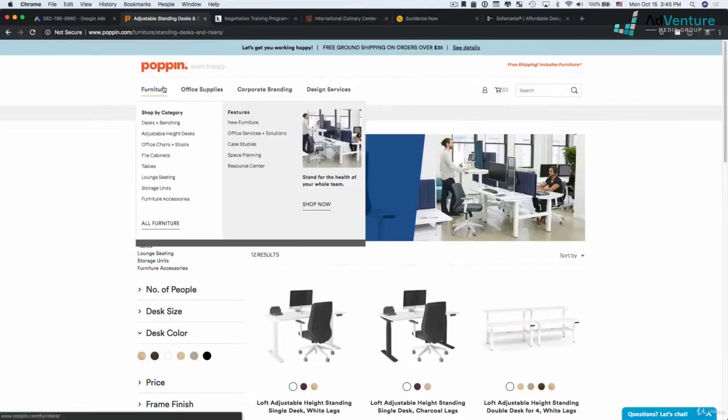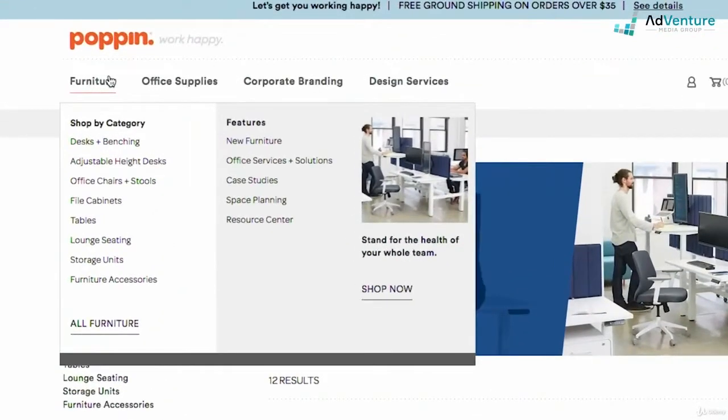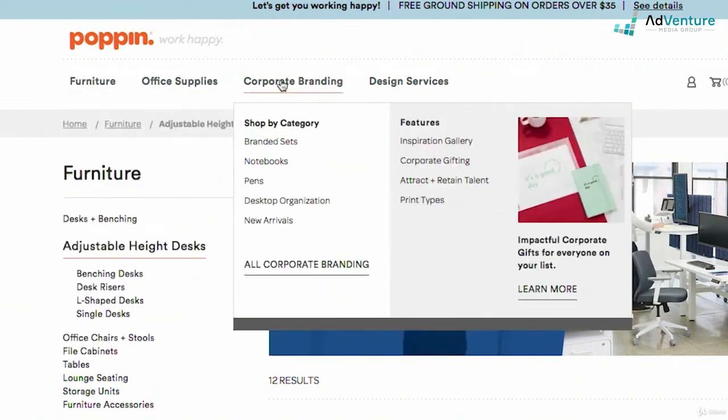So again, there's two ways I would potentially break it out. I would have a top level campaign for furniture with ad groups below: ad groups for file cabinets, tables, lounge seating, and so forth. I might have a campaign for corporate branding, and then an ad group for branded sets, notebooks, pens, desktop organization, new arrivals.